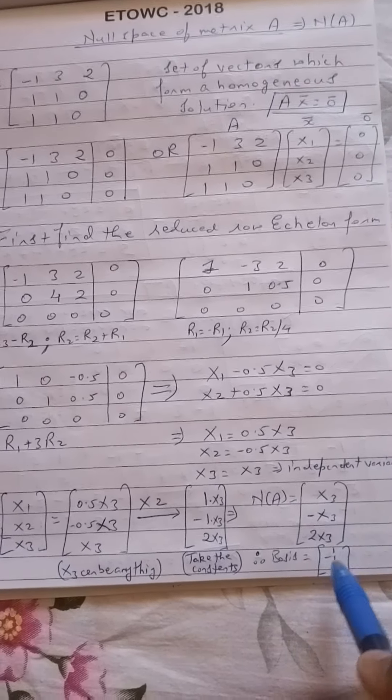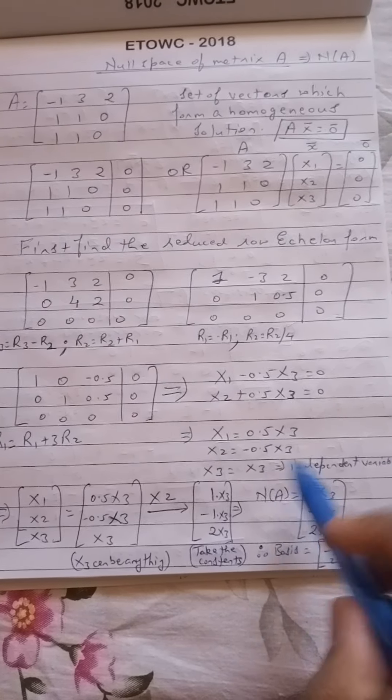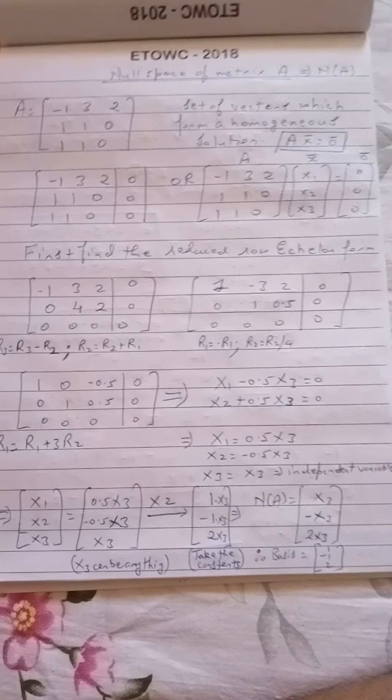Or we can just take the constants here and just write as 1, minus 1, and 2, which will just become the basis of this matrix A. Now more on this basis will be covered in my upcoming videos. But this is how we find the null space of any matrix A.